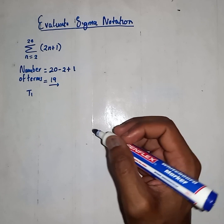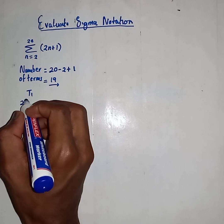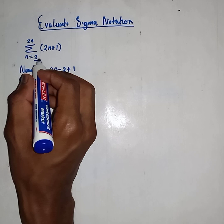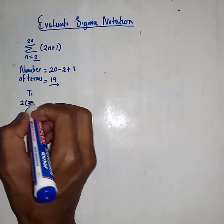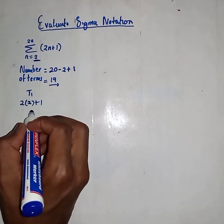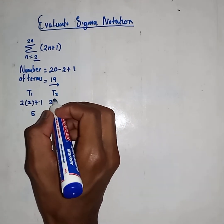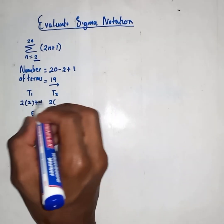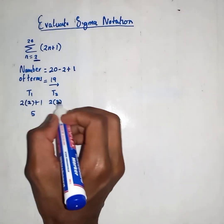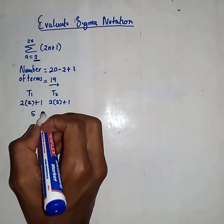Let's go and figure out the first term. As for the first term, we take our general formula 2n plus 1 and substitute n=2, giving 2(2)+1 = 4+1 = 5. For term 2, substitute n=3: 2(3)+1 = 6+1 = 7.